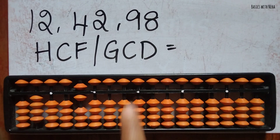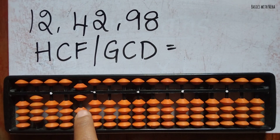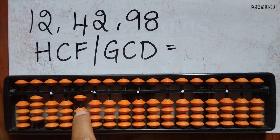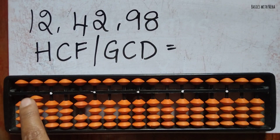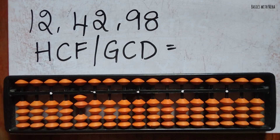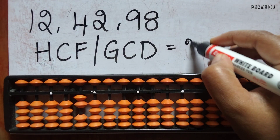In these two remaining rods, this is 6 and this is 4, so 6 is larger. I'm going to subtract 4 from it — minus 4 gives 2. Now 2 is smaller than 4, so I subtract 2 and remove one of the rods. The answer is 2 — the HCF or GCD of 12, 42, and 98 is 2.